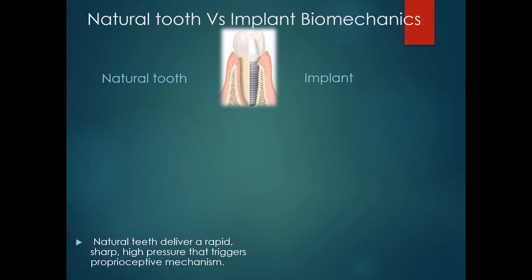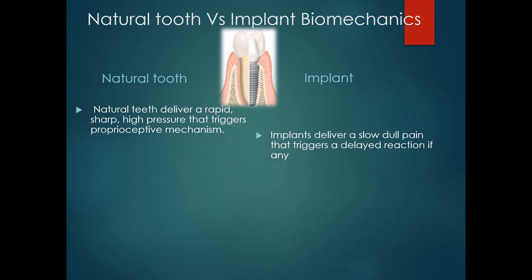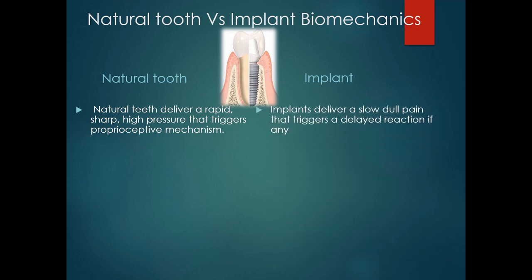The proprioceptive information relayed by teeth and implants also differs in quality. Tactile sensitivity is high for natural teeth — they can sense particles as small as 10 micrometers and deliver a rapid, sharp, high-pressure stimulus that triggers the proprioceptive mechanism. In the case of implants, tactile sensitivity is less; they can detect particles only up to 25 micrometers, and implants deliver a slow, dull pain that triggers only a delayed reaction, if any.